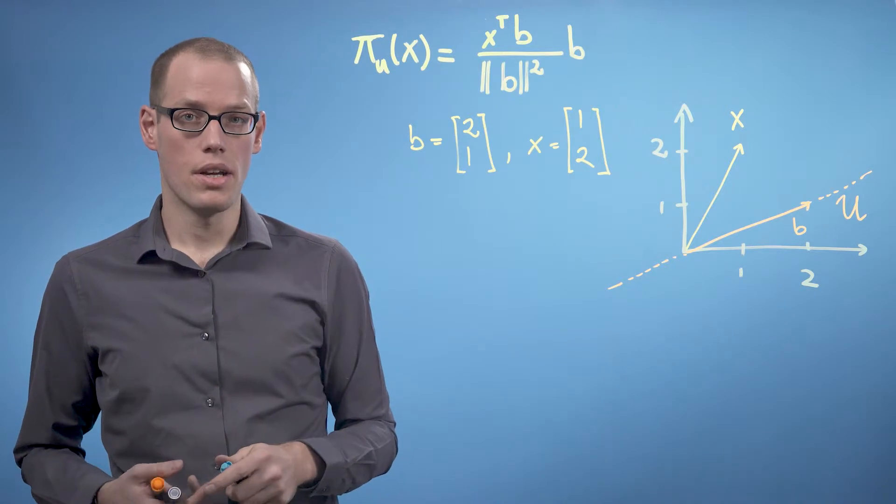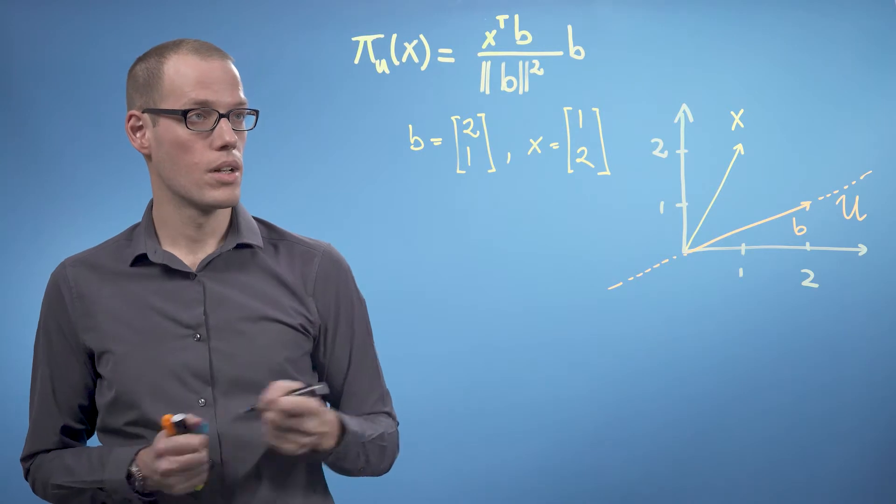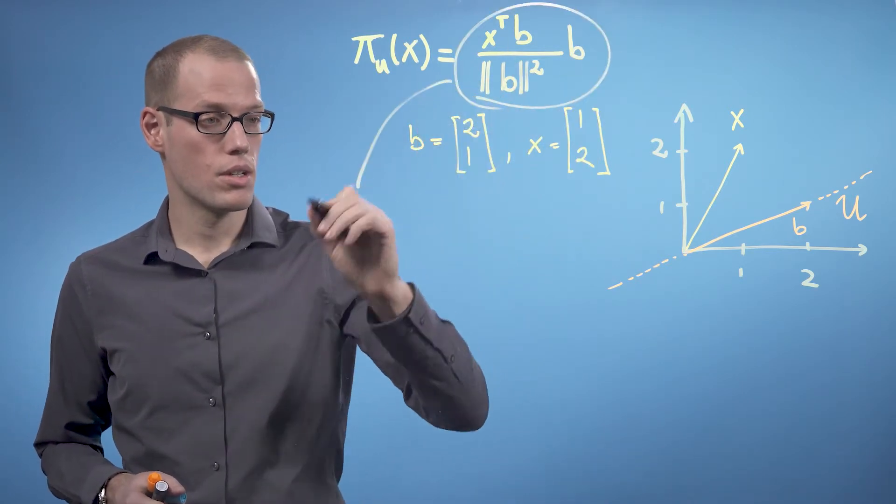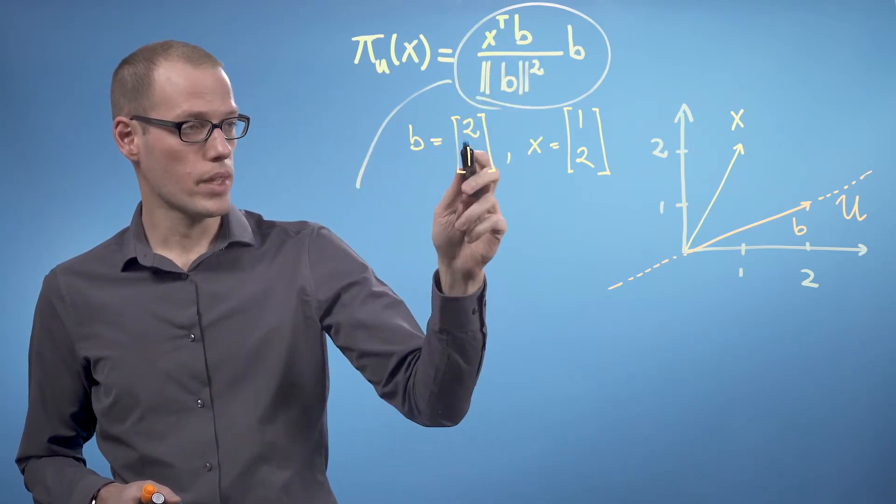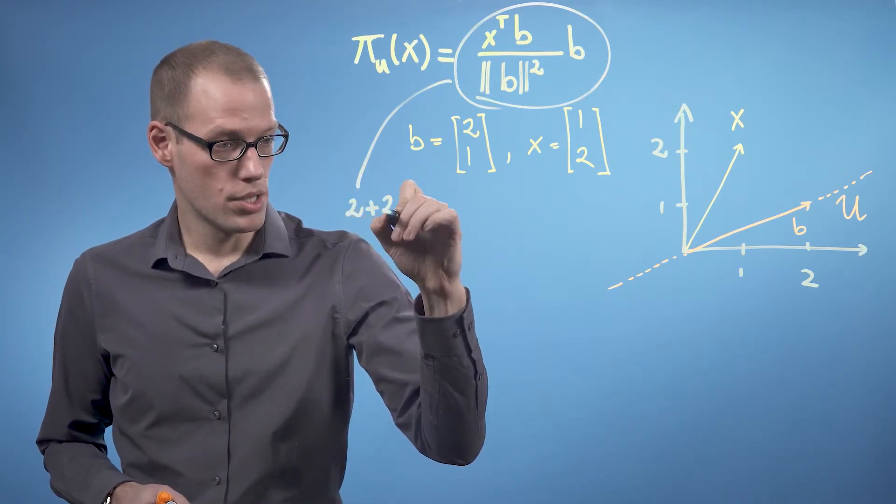So, now we are interested in computing the orthogonal projection of x onto u. Using this equation here, we get x transpose times b is 2 plus 2.